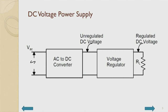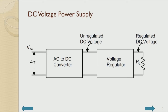We derive the DC voltage power supply using an AC line to DC converter. The AC line is 230 volts at 50 Hz, and we convert it to a DC voltage using an AC to DC converter, which is nothing but a rectifier in combination with a capacitive filter.